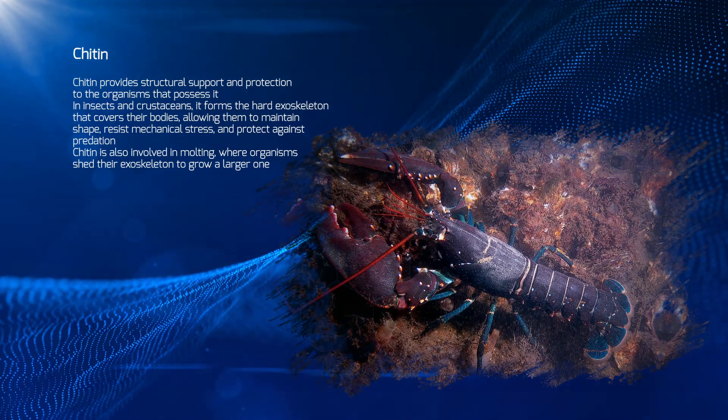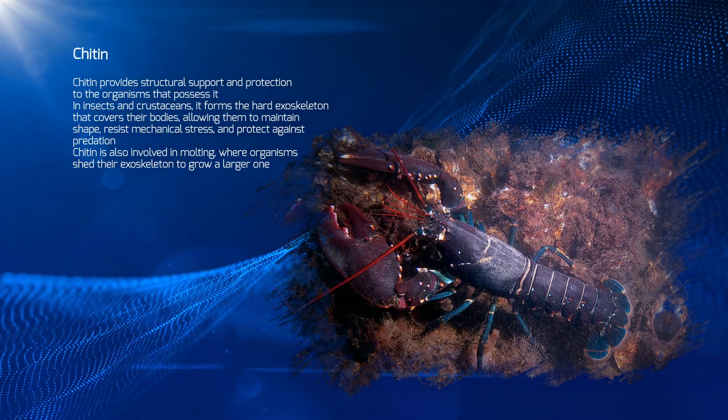Chitin is also involved in molting, where organisms shed their exoskeleton to grow a larger one.